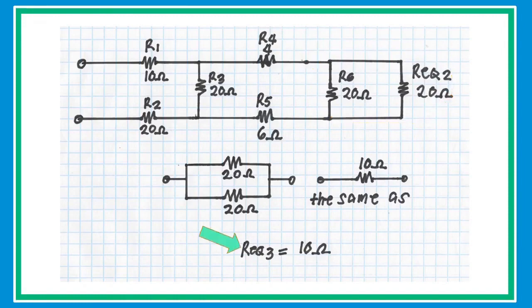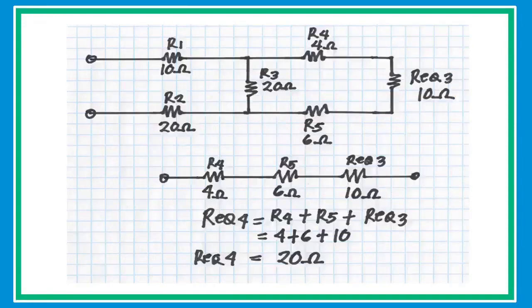Collapse and redraw the circuit again. In the new circuit, R4, R5, and R_equivalent are connected in series. Since they are in series, simply add the three resistors — R4, R5, and R_equivalent — and substitute values to get an equivalent resistance of 20 ohms.